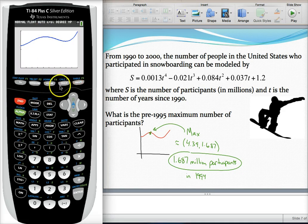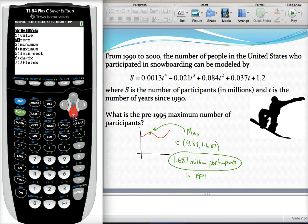Recall that under calculate, we also have a maximum option. So second trace, this time select maximum to find the high points of our graph.